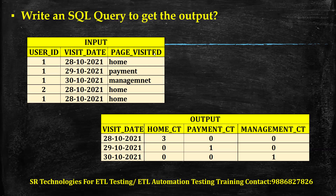If you see the user ID, it's simply one, one, one, two, one and so on. When it comes to visit date and page visited, the major thing they want in the output is how many people visited the home page, what is the count of visits to the payment page, and what is the count of visits to the management page.